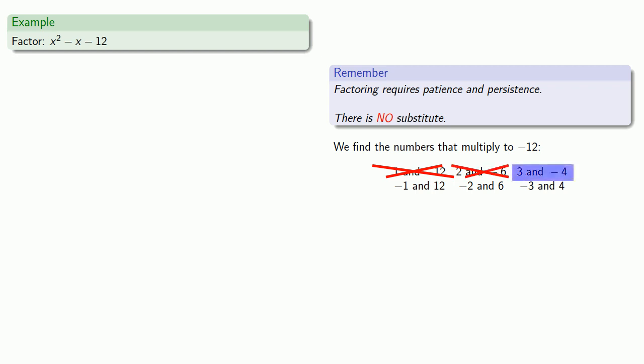We'll try 3 and negative 4 next. Is x squared minus x minus 12 the same as x plus 3 times x minus 4? So we'll expand. And it is. There's our factorization.